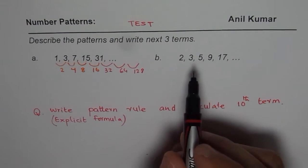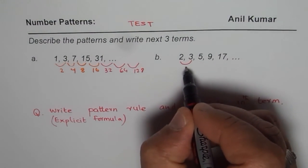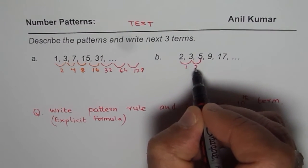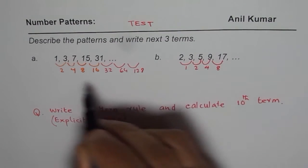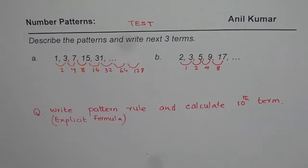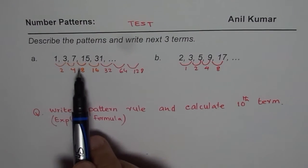Let's look into the next pattern. The next pattern here is 2, 3, 5, 9, 17. So here, we are going up by 1, then we are going up by 2, we are going up by 4, and then we go up by 8. It's kind of similar — do you see that? So what we see here is both patterns are very, very similar. You can pause the video, think about it, try to find an answer, and then look into my suggestion.